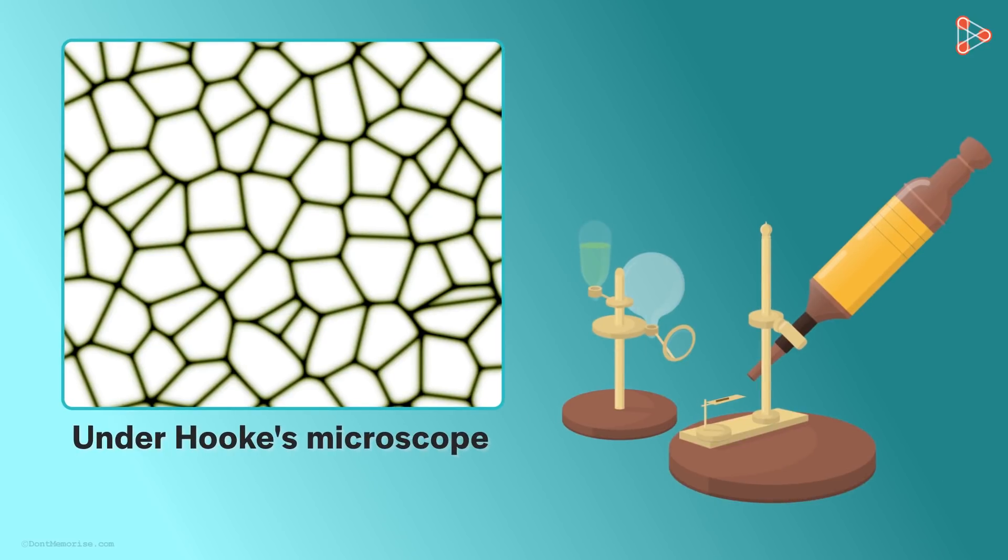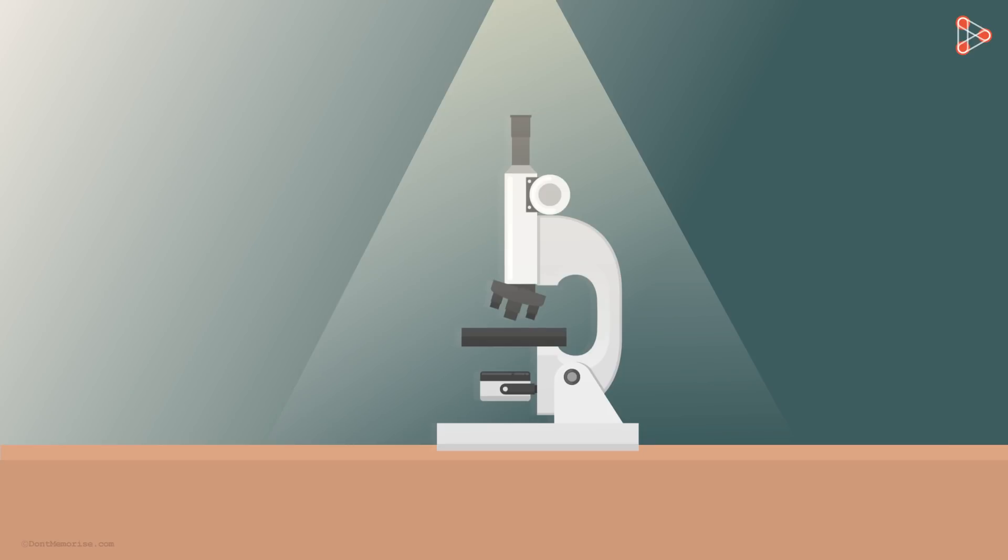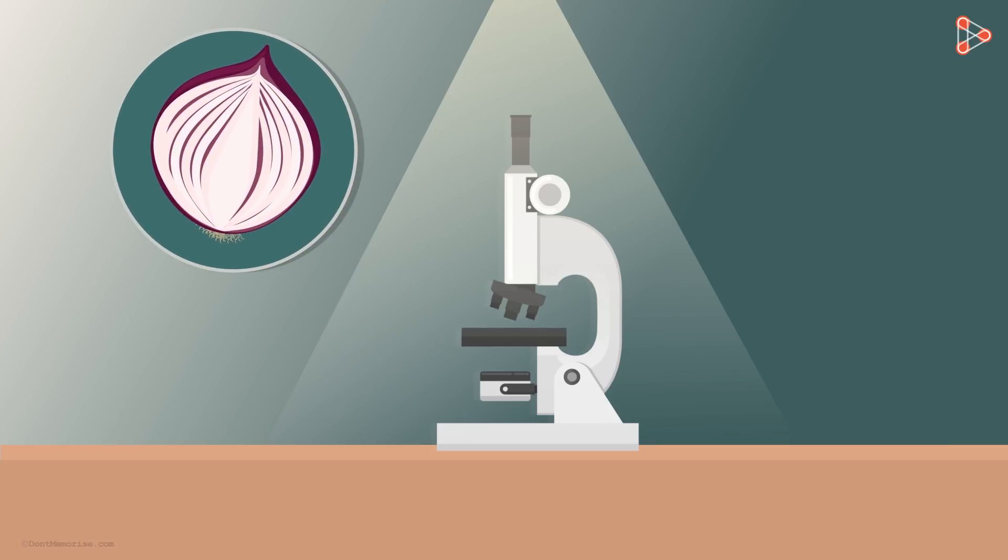Now it's time to have a look at how the cells actually look under a microscope. For this, we select onion peel as our specimen. But before we begin with the procedure, let's first collect the necessary requirements.